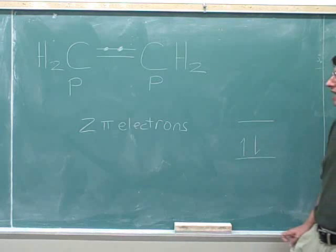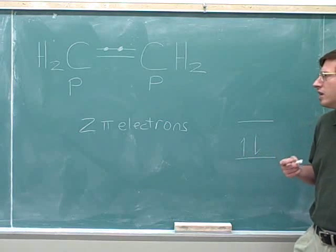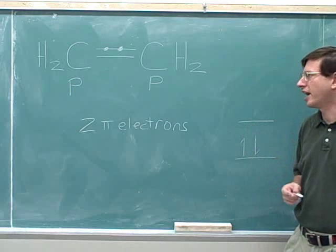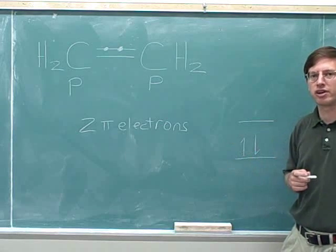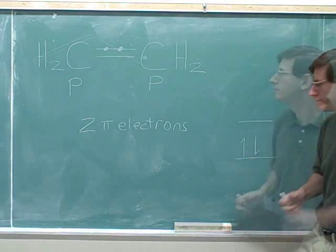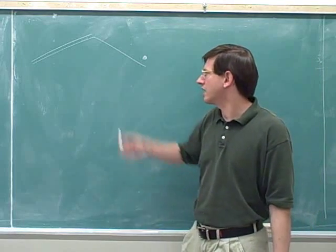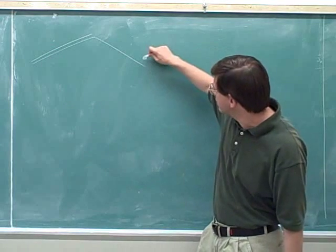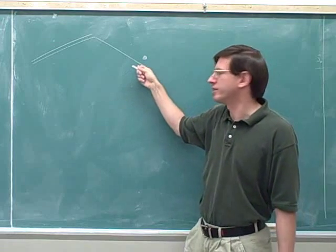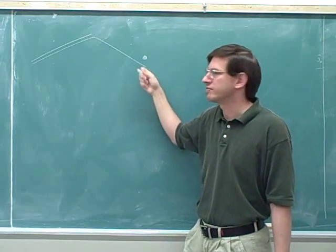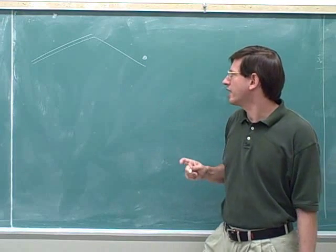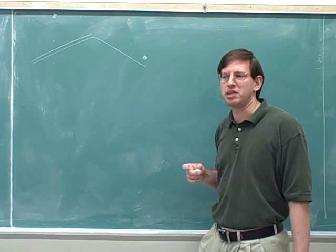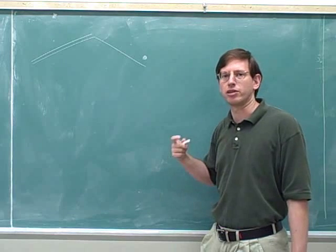We're only going to be drawing the pi molecular orbitals. This molecule also has a bunch of sigma molecular orbitals, but we don't care about those. We're not going to pay attention to the sigma orbitals or the sigma electrons — only pi. Let's try to go through the same exercise for this molecule: a three-carbon molecule with a double bond and an unpaired electron, making it a carbon radical. Try pausing and writing down the pi molecular energy levels and placing the pi electrons into the pi molecular orbitals.